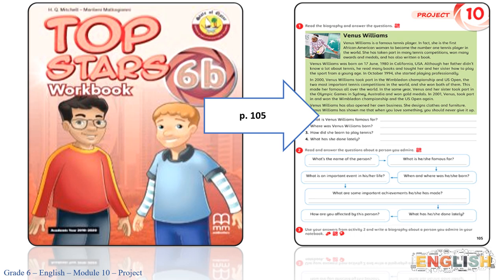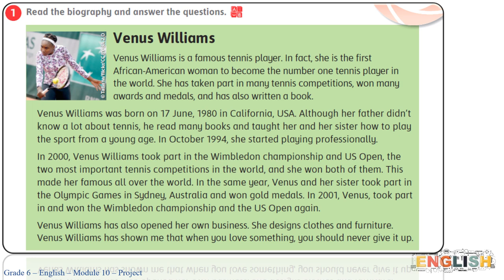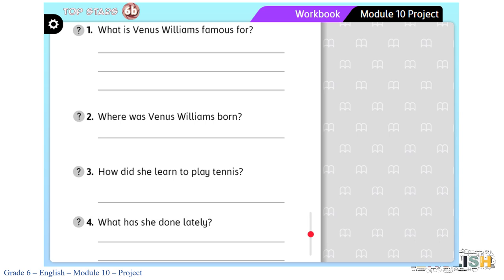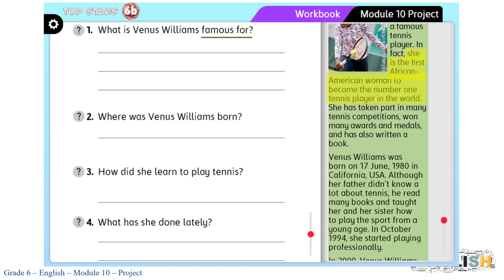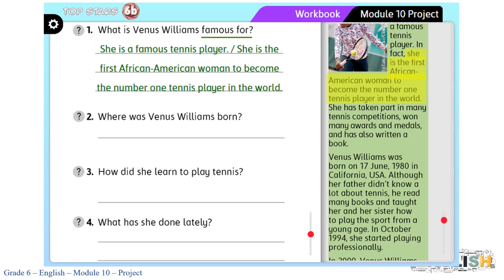Now it's time to go to the workbook, page 105, especially exercise 1. Read the biography and answer the questions. Before we answer the questions, let's see who this biography is about — it's about Venus Williams. We have four questions. Let's start number one together: what is Venus Williams famous for? She is the first African-American woman to become the number one tennis player in the world, or you can say she is a famous tennis player.